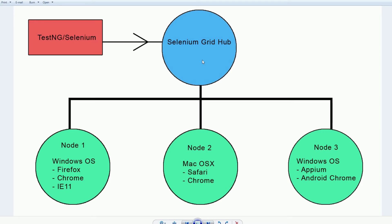So it's a good way to not only distribute your tests amongst different setups, but you could also run in parallel. On one of these nodes you can have up to five instances of Firefox running, so when you run parallel with five threads it will start running five different browsers and run your tests in parallel. You can do it amongst different nodes — if you're running Firefox and Mac Safari it will run those simultaneously as well.